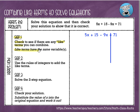Remember that like terms have the same variable or the same variables. Step two is we're going to use the rules of integers to add the like terms together — we are always adding our like terms. Step three is we're going to solve the two-step equation. You guys are pros at solving two-step equations by now, I'm sure. And the last step, step four, is we're going to check the solution. We'll talk a little bit more about that when we get to it because sometimes people misinterpret what's meant by that.